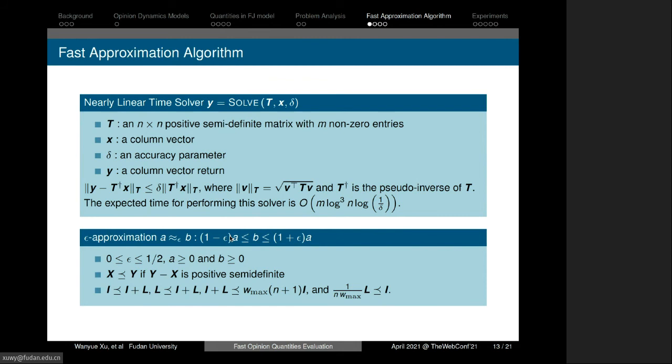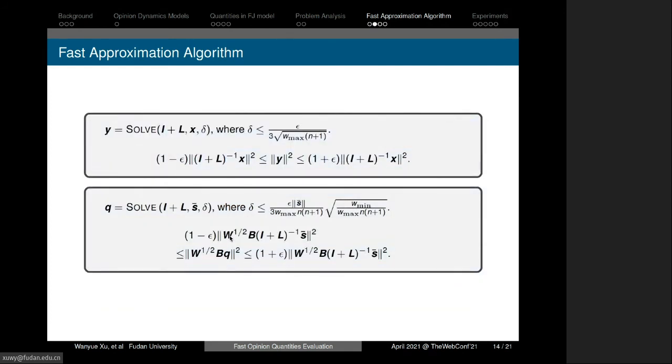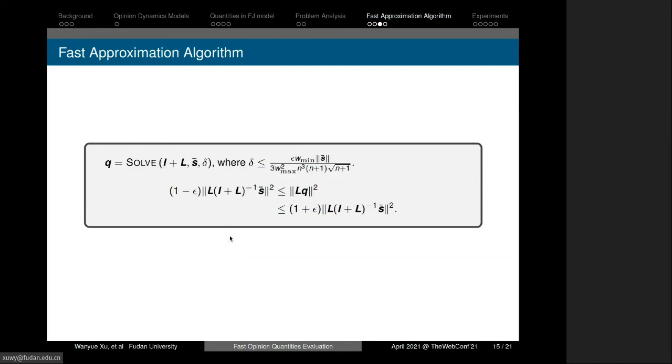We also use epsilon approximation to give an upper bound of I plus L by using the maximum edge weight in the graph. Using the nearly linear time solver and epsilon approximation, we give three lemmas to prove theoretical guarantee errors for our approximation algorithm. These returned values are parts of the quantities we analyzed in the L2 norm.